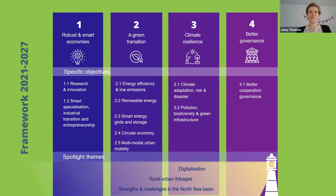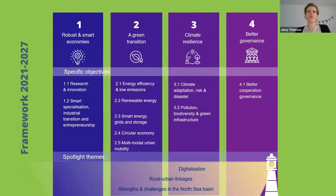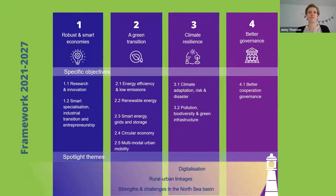Each project has to choose a priority and one of the connected priority specific objectives. There are two priority specific objectives for priority one, five for priority two, two for priority three, and one for priority four. The priority specific objective you choose is key, because it demonstrates the link between the program objective and your project objective, and it also defines which indicators you can choose.